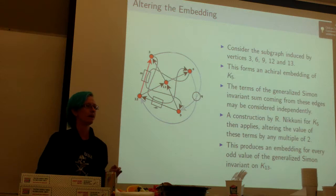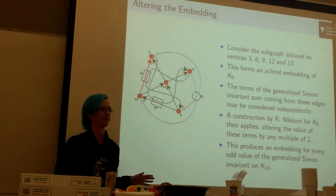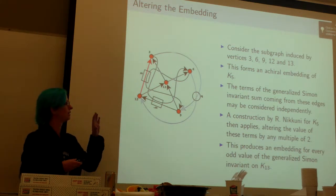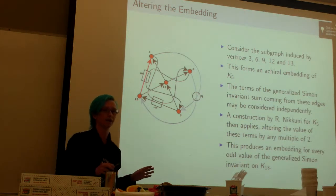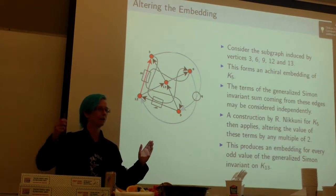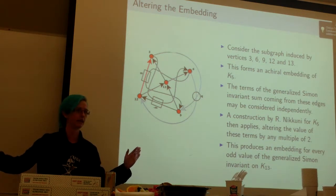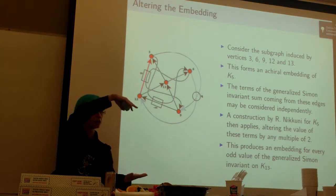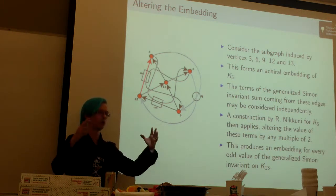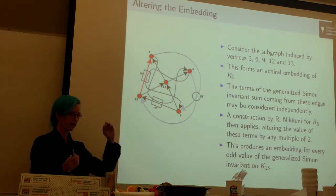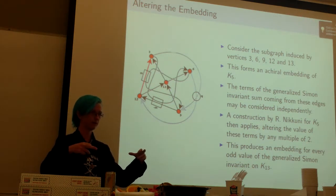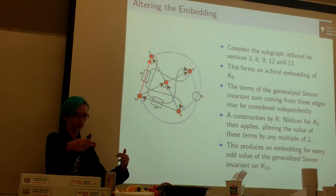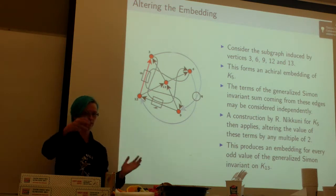Then once you know it's odd, how do you get every other odd number out of it? I got really lucky at this point. Ryo Nikkuni in Japan came up with this structure for K5, the five vertex graph, where they can create every odd value on it with the Simon invariant and not disturb the chirality. Now I noticed that if you take just the outermost layer of this large ball of crossings, then you can take a subgraph that is K5 out from this big K13. All you do is you take the center vertex and then you take four on the edges so that you have the same structure.